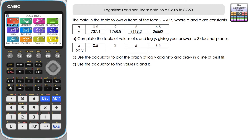Let's take a look at the question. We've got data in the table below that follows a trend of the form Y equals a times B to the power of X, so there's an exponential relationship between the variables Y and X, where a and B are constants.